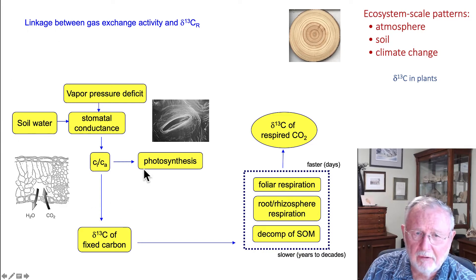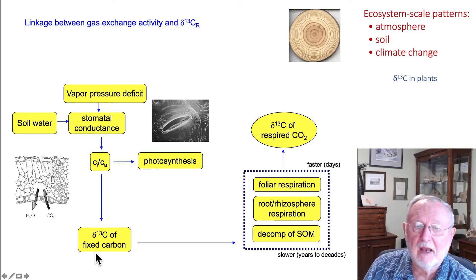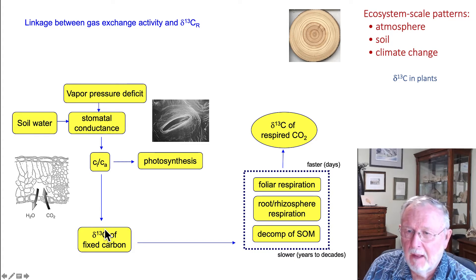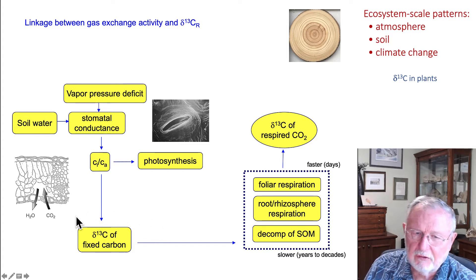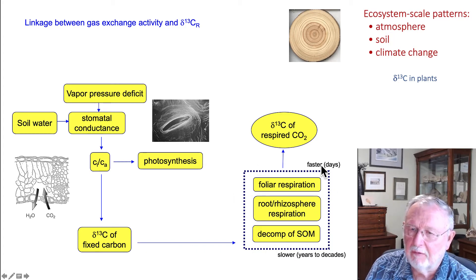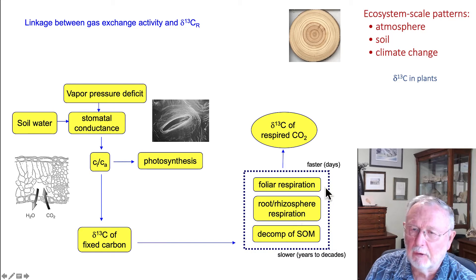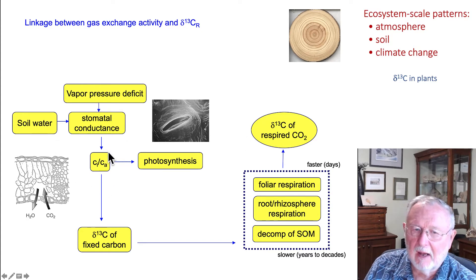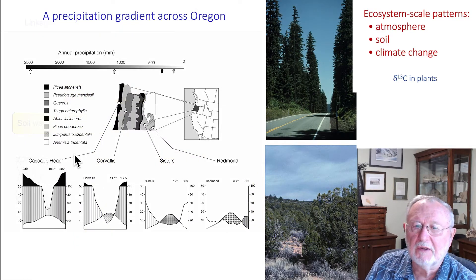We've seen this relationship before, where the CI/CA ratio reflects the balance of supply, stomatal conductance, and photosynthesis, and that carbon is fixed. What you might not realize is that a lot of the CO2 which is fixed over the course of the day is respired within the next 24 to 48 hours. Although a fraction is coming from decomposition, a significant fraction is coming from foliar respiration. So we can measure the ¹³C of respired CO2 and learn something about how the CI/CA ratio has changed within that ecosystem.